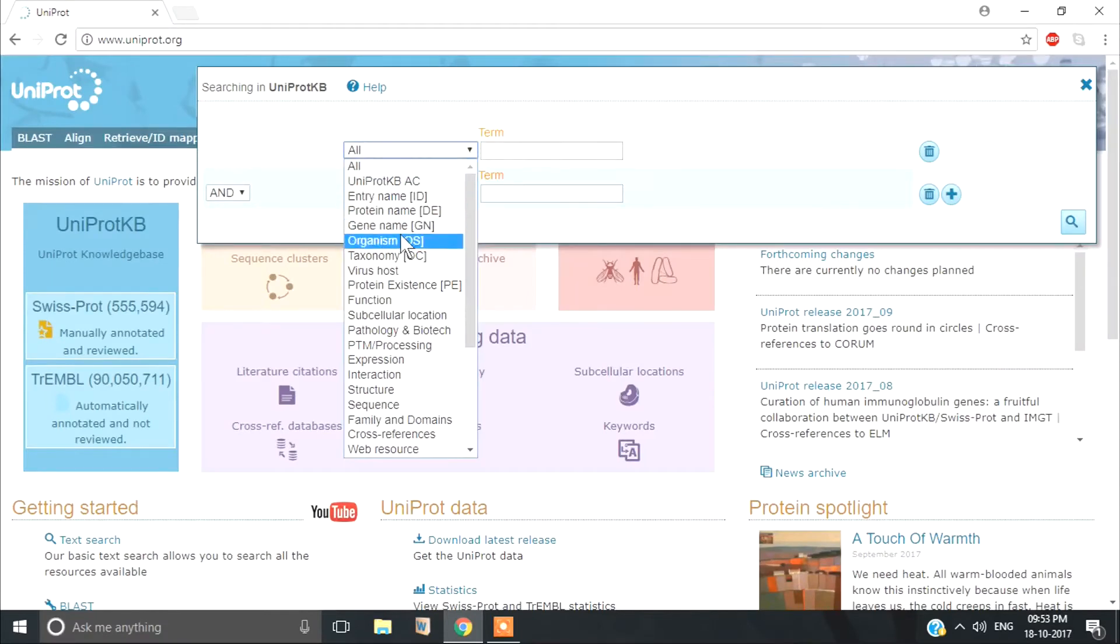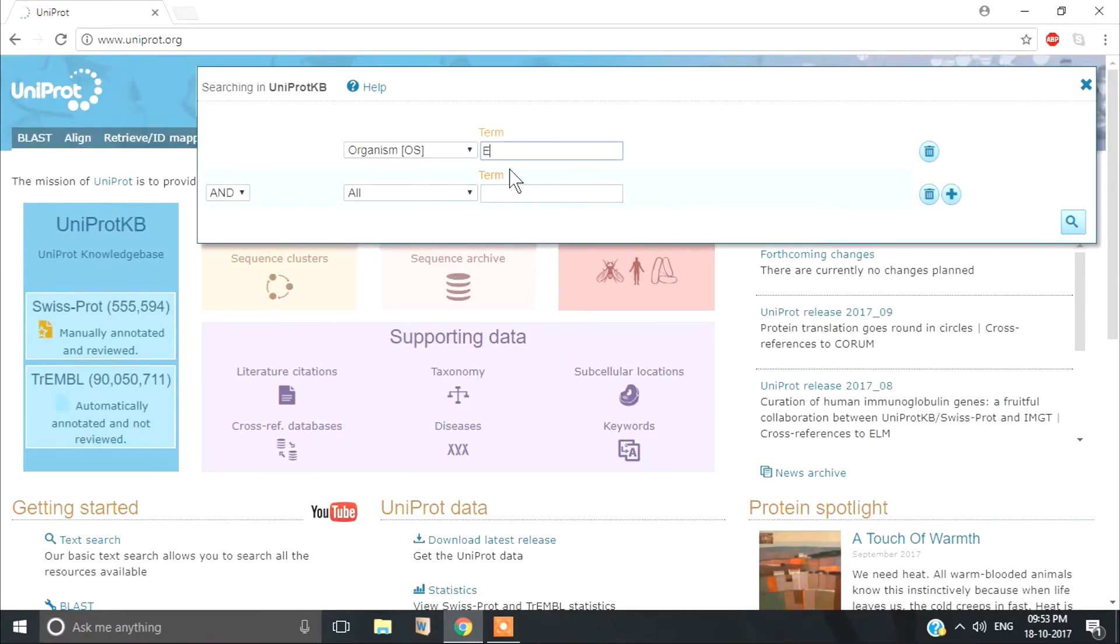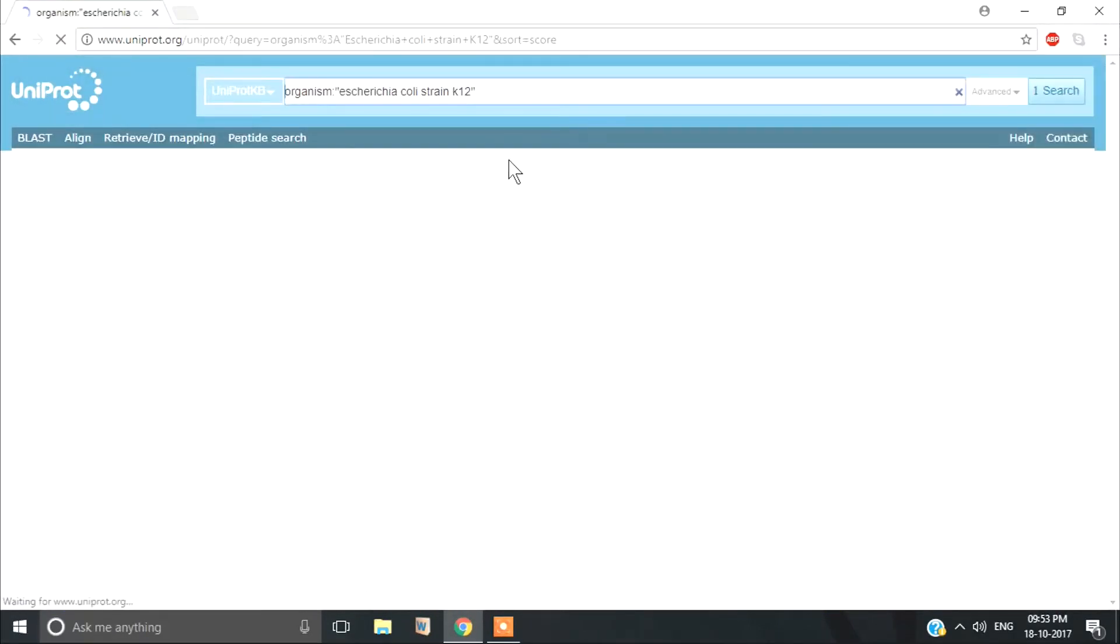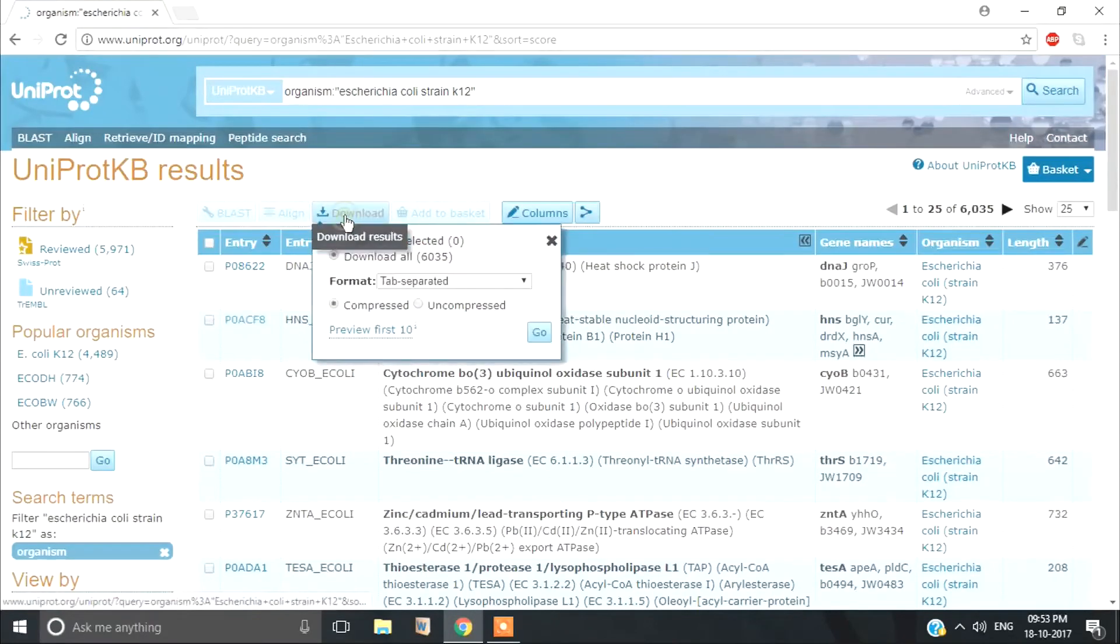The first step is to go to UniProt, select organism Escherichia coli, and download the documented proteins along with their lengths.